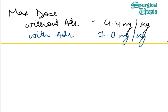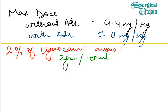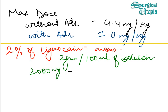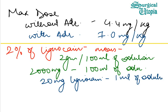Now, what do we mean when we say 2% lignocaine? 2% lignocaine means 2 grams of lignocaine in 100 ml of solution. This means there is 2000 milligrams in 100 ml of solution, which means there is 20 milligrams of lignocaine in 1 ml of solution by unitary method.